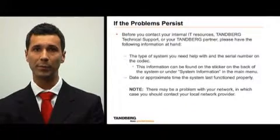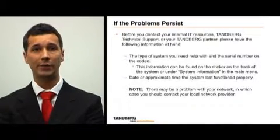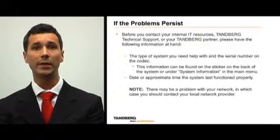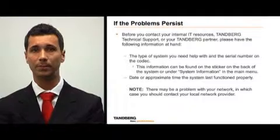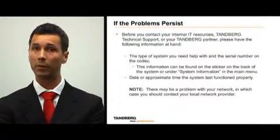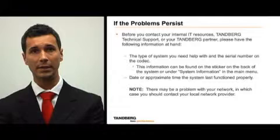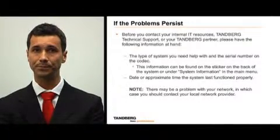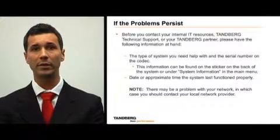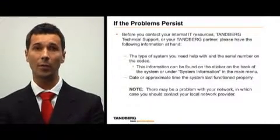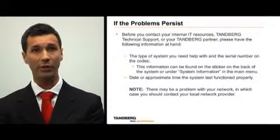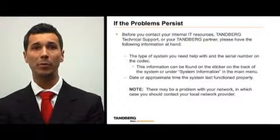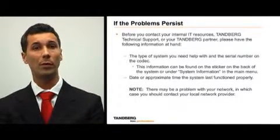If the problems persist, before you contact your internal IT resources, Tamburg technical support, or your Tamburg partner, please make sure you have the following information at hand: the type of system you need help with, the serial number on the codec, and the date or approximate time the system last functioned properly. The system information and serial number can be found on a sticker on the back of the system, or under system information in the main menu. Also, there may be a problem with a network, in which case you should contact your local network provider.